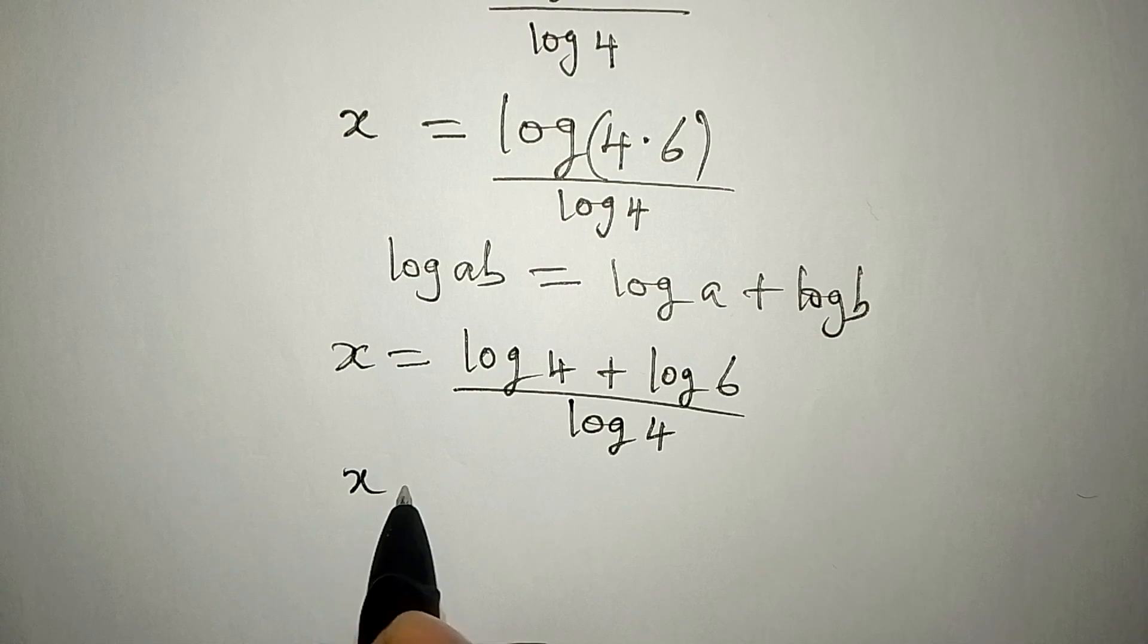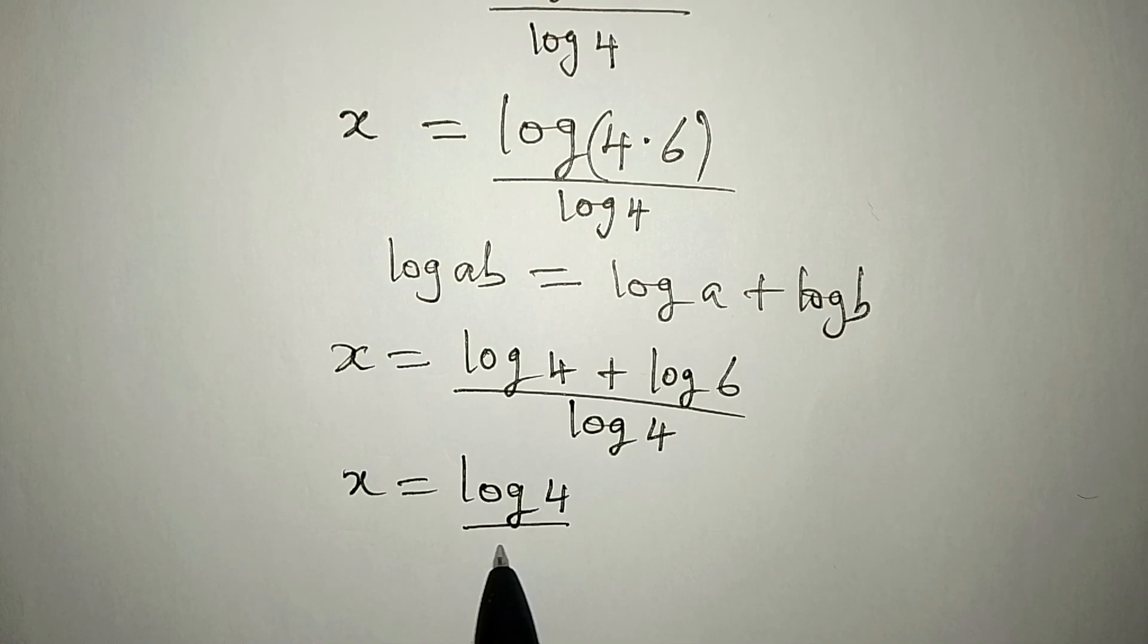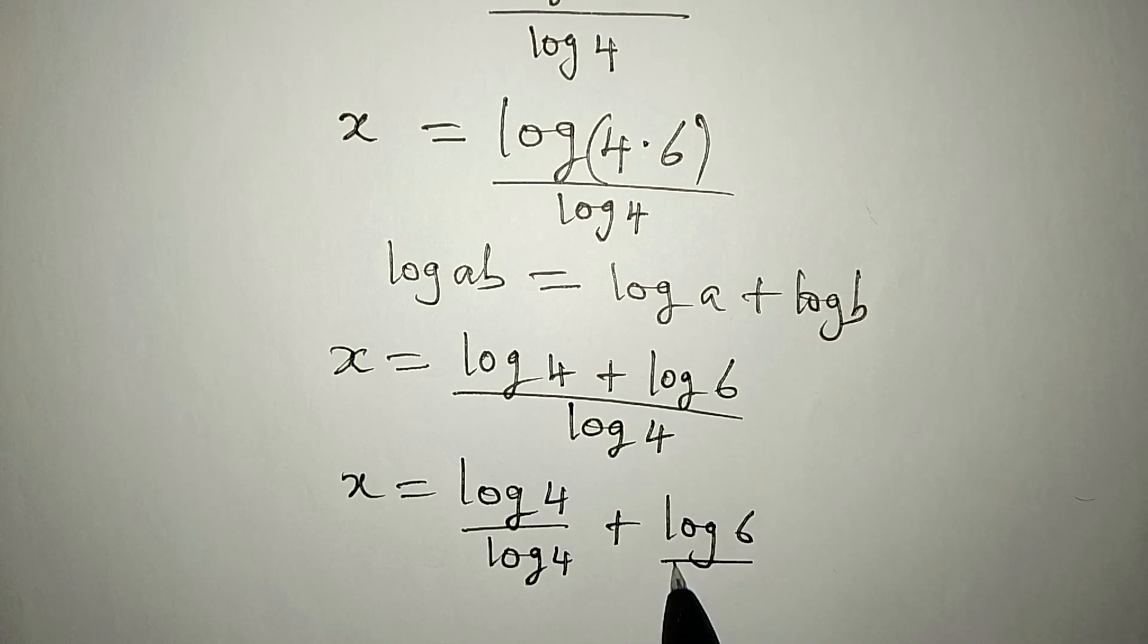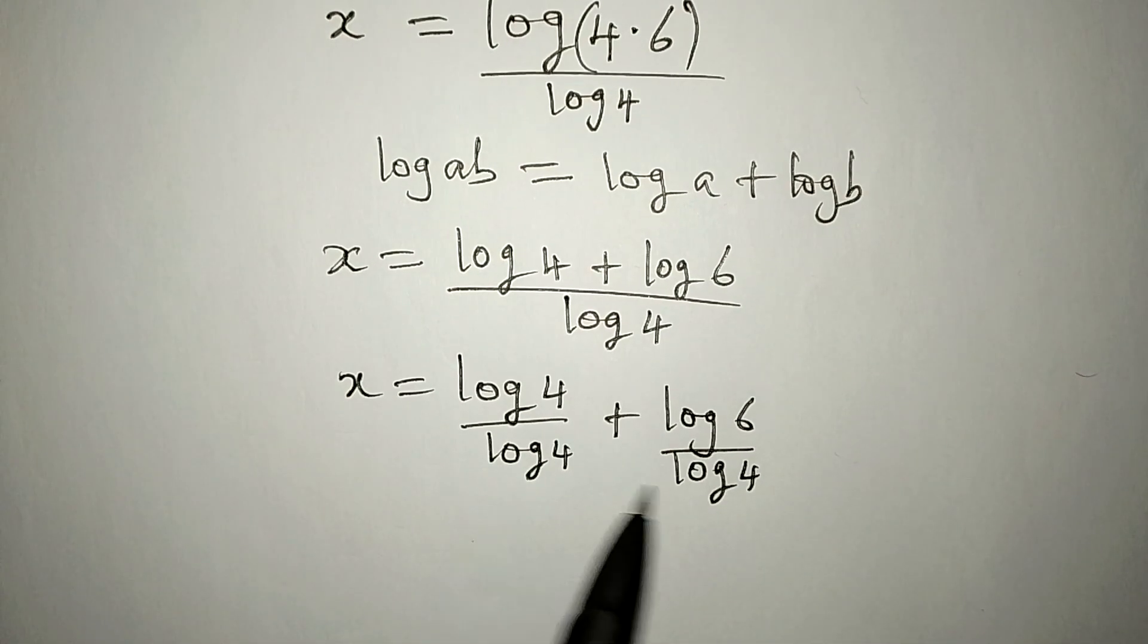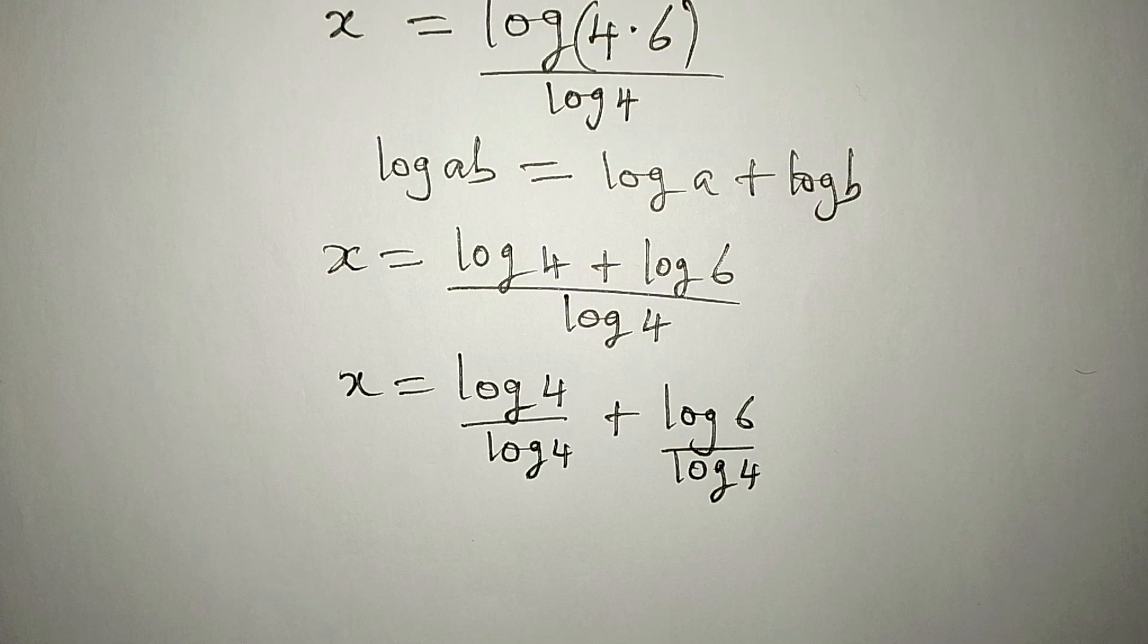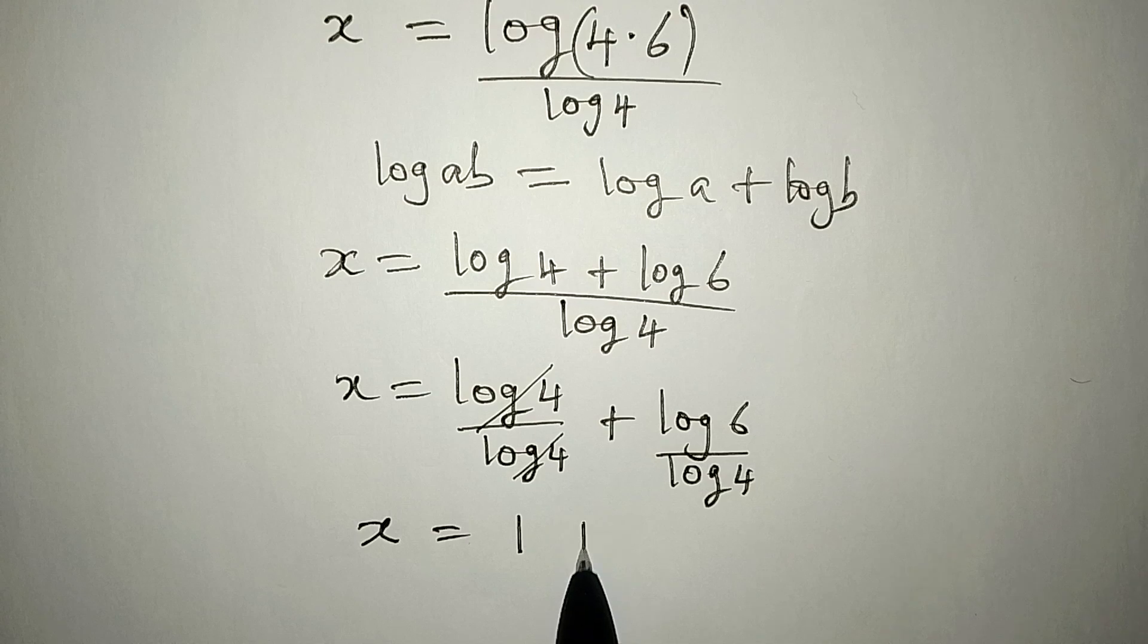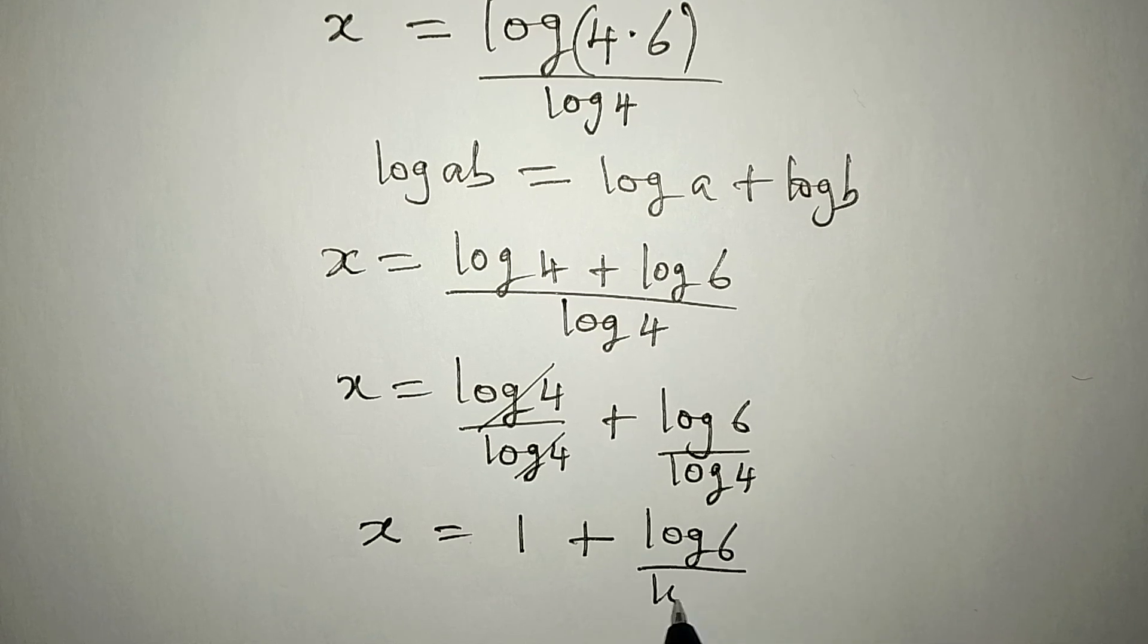And then, what does this mean? This means that x is equal to log 4 over log 4 plus log 6 over log 4. Because from here, if you find the LCM, it will still give you back what we have over there. Now, this will go there. And we are going to have x to be equal to 1 plus log 6 over log 4.